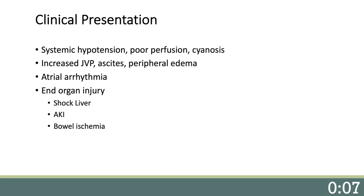Patients with RV failure present clinically with hypotension, poor perfusion, and cyanosis. They have elevated venous pressures and can develop ascites and peripheral edema. They often have arrhythmias or loss of capture of their atrial leads after surgery, and they are prone to develop end-organ injury.